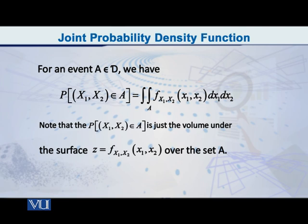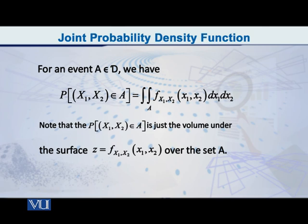One other thing I will discuss is the geometric interpretation. The probability you compute is the volume under the surface given by this bivariate PDF, small f of capital X1, capital X2 at the point x1, x2. Geometrically, it is a surface in two-dimensional space.